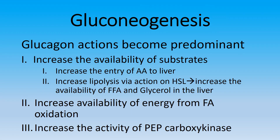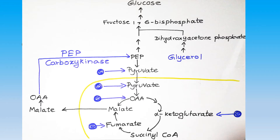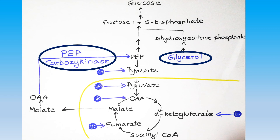With its predominant action, glucagon increases gluconeogenesis by increasing the availability of substrates, availability of energy, and activity of key enzymes. Glucagon increases the entry of glucogenic amino acids to the liver. It also increases lipolysis via increased activity of hormone-sensitive lipase enzyme, raising the availability of free fatty acids and glycerol in the liver. Glycerol joins the pathway, and increased free fatty acids undergo fatty acid oxidation to provide additional energy for gluconeogenesis. Glucagon also increases the activity of PEP carboxykinase enzyme, and the rate of gluconeogenesis is increased.